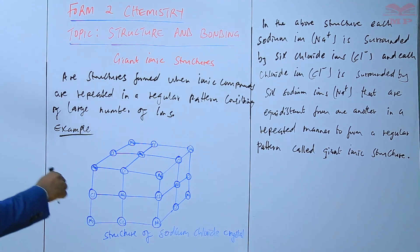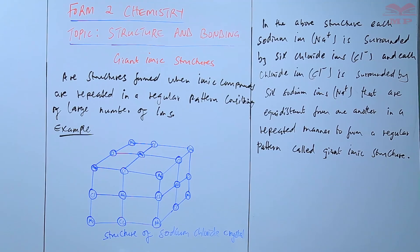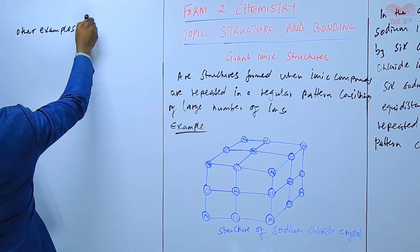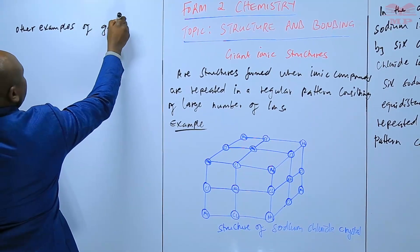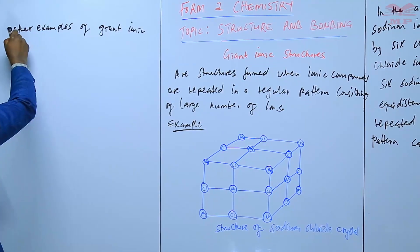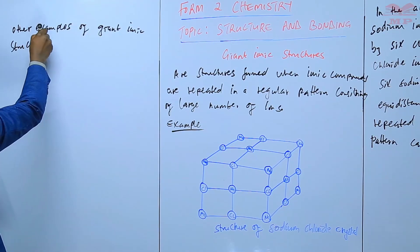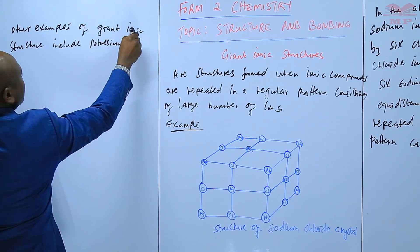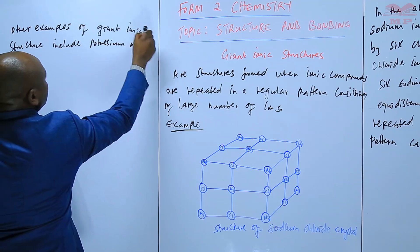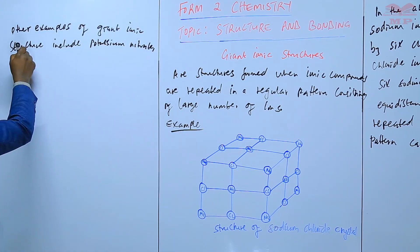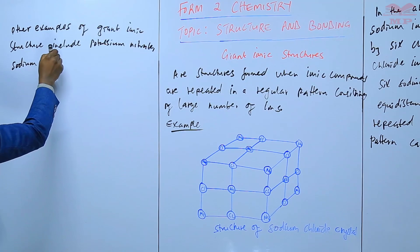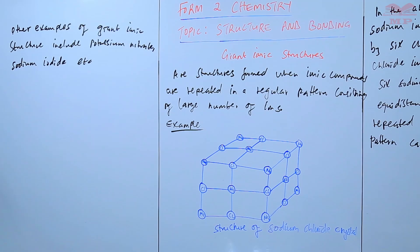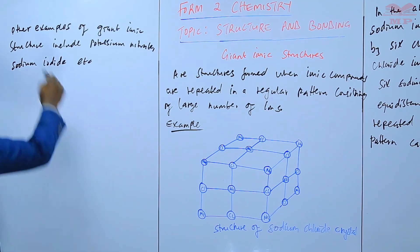We can also have other examples of giant ionic structures. These include potassium nitrate, sodium iodide, et cetera. So all of those have giant ionic structures.